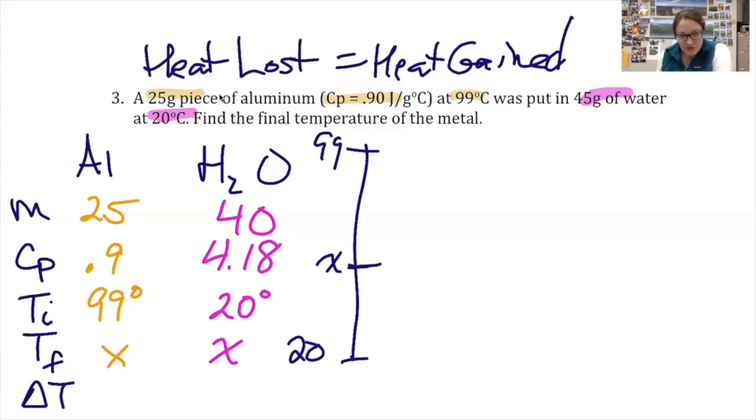Then when I set up my temperature change terms, I need to set it up as bigger minus smaller, where this is the temperature change of the aluminum, and this is the temperature change of the water, bigger minus smaller. Always bigger minus smaller, and that's going to make all the difference in getting the right answer to these problems.